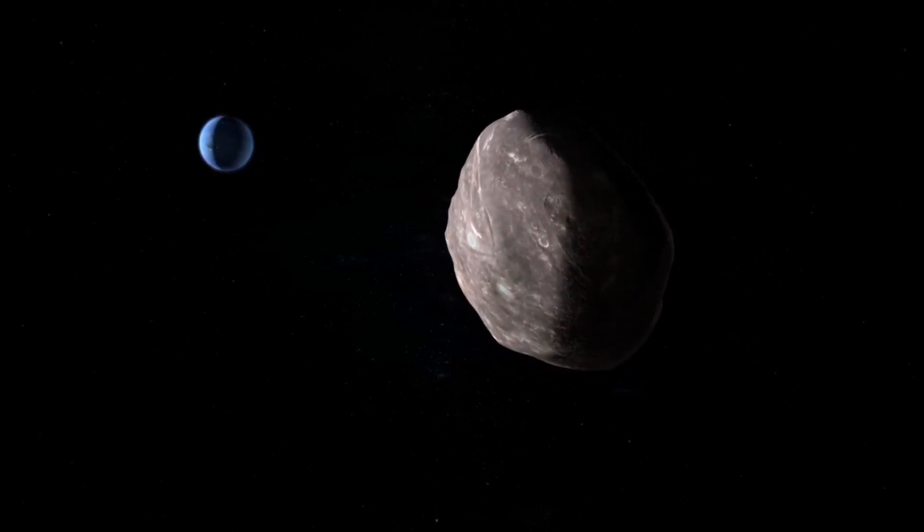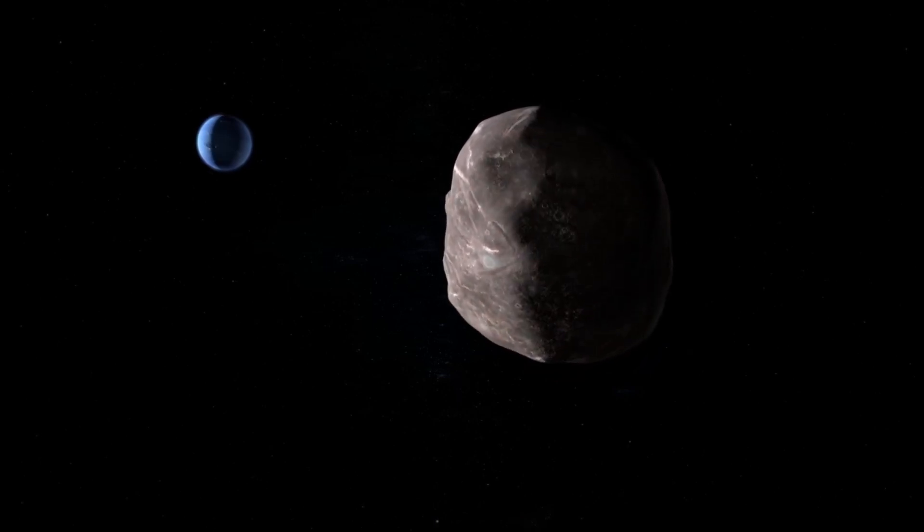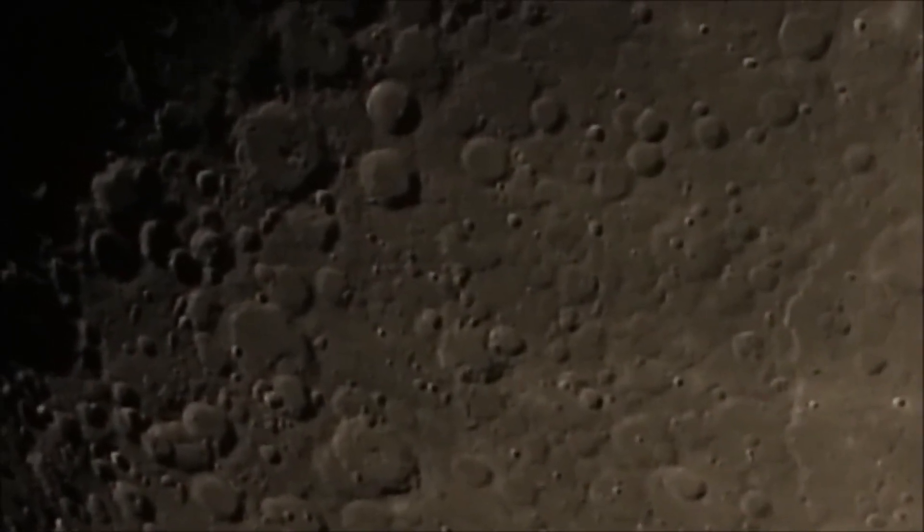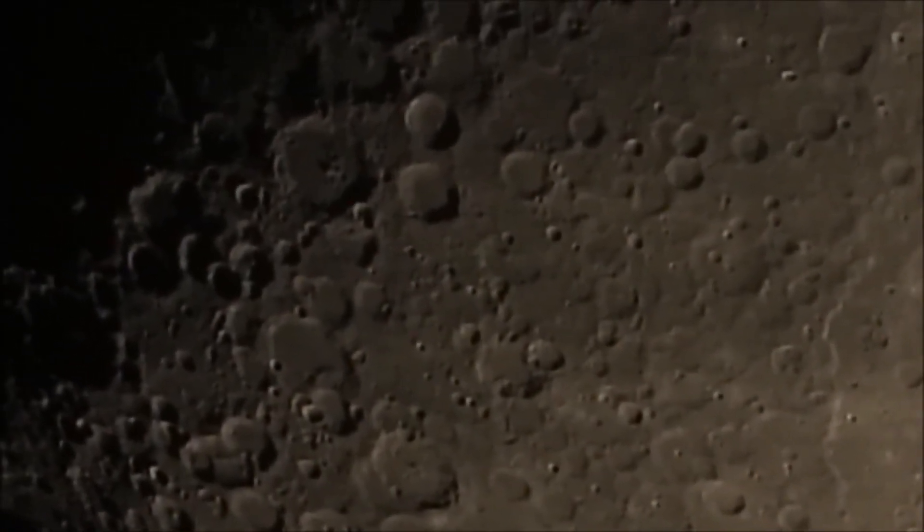Voyager 2 was the first spacecraft to pass by Uranus in 1986, and three years later, it flew by Neptune, the only spacecraft to have done so to date. Today, the Voyager probes are still surprising physicists with unexpected discoveries about the unexplored region of space they now inhabit.